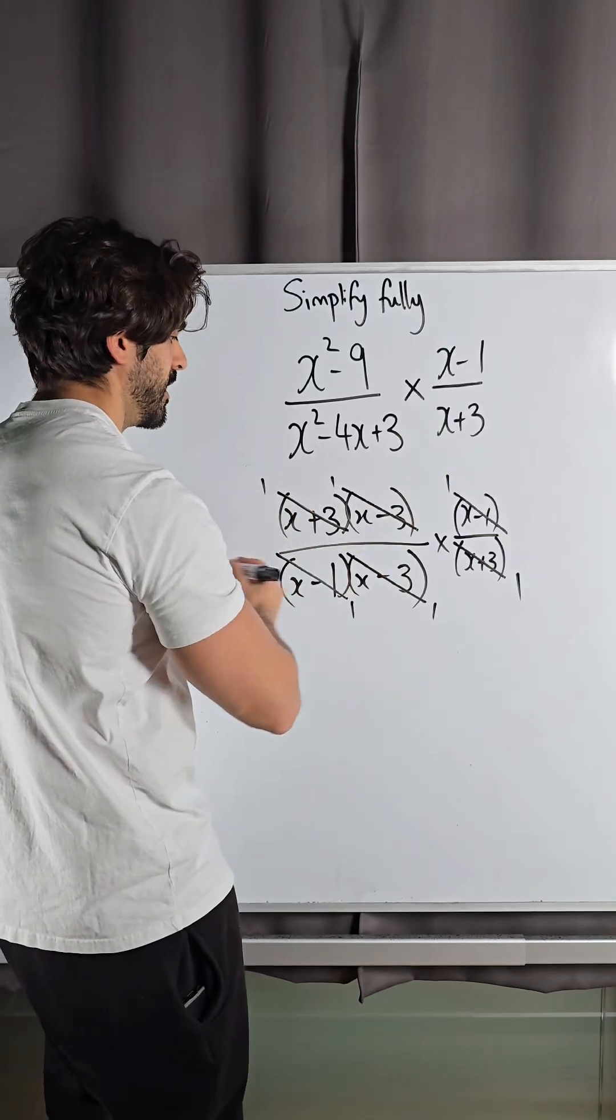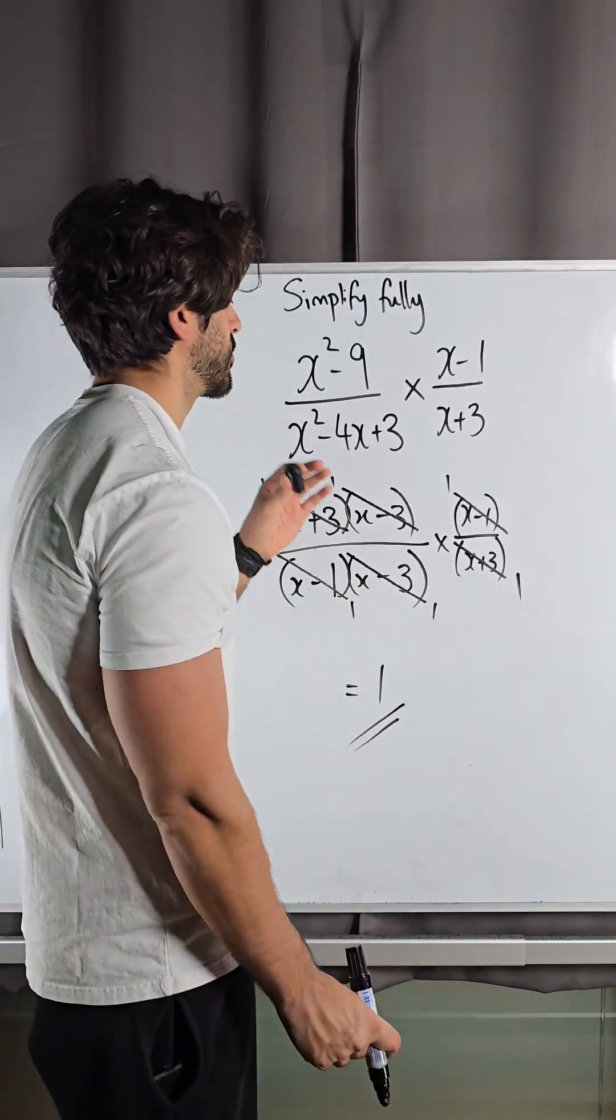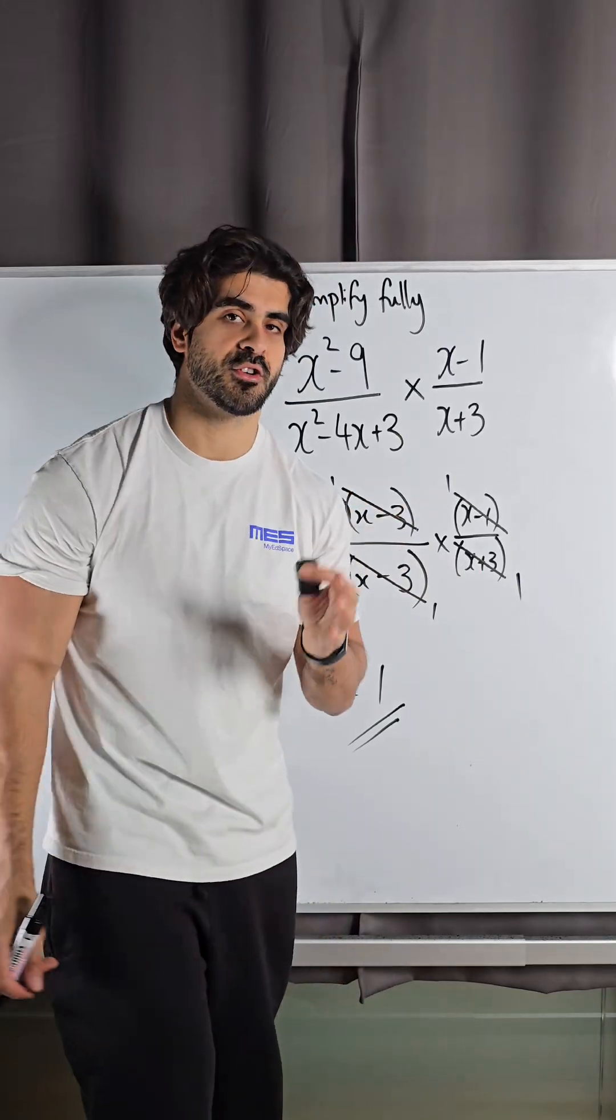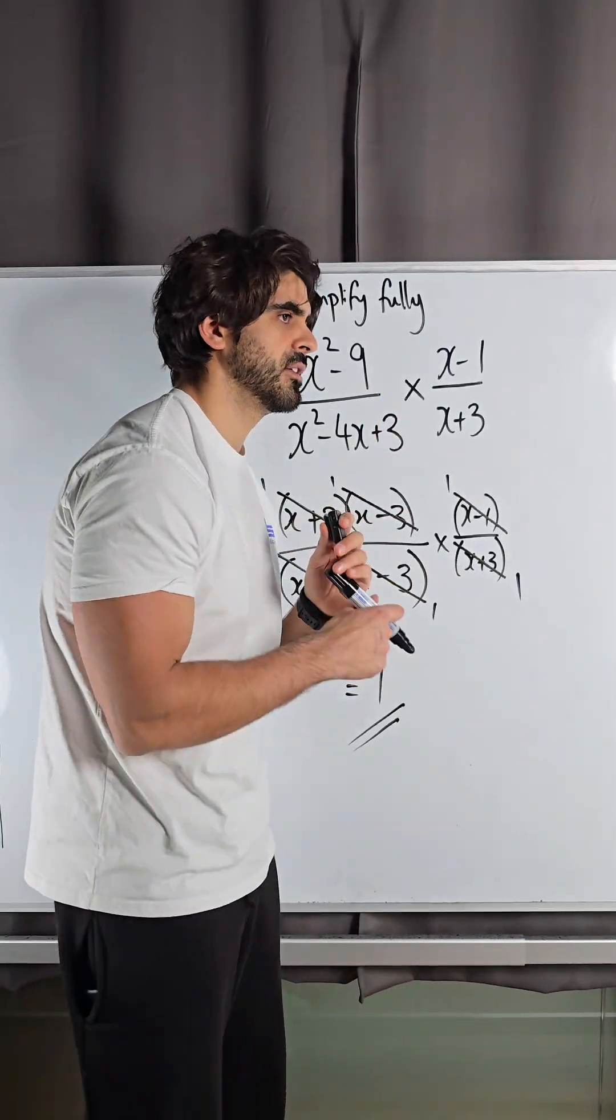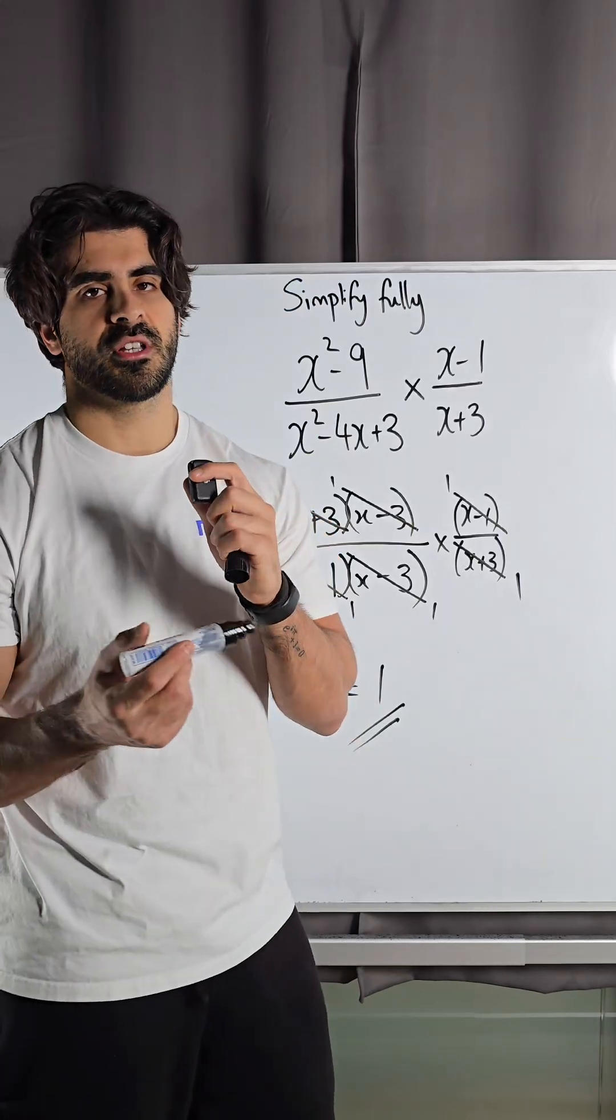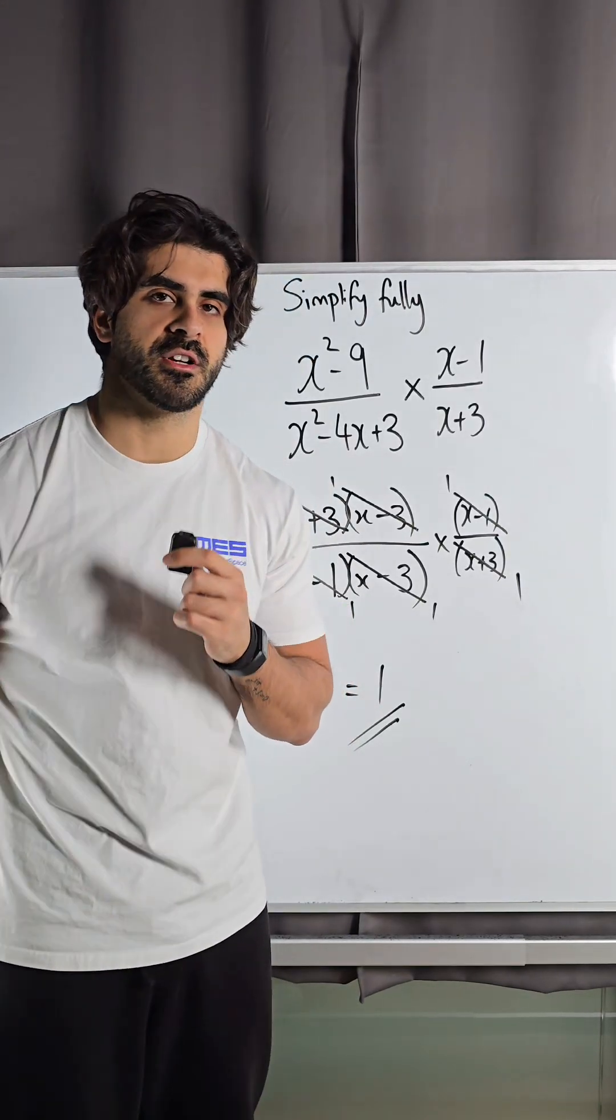So we're left with 1 on the top, 1 on the bottom. It all simplifies very nicely down to 1. So this video is part of your algebraic fractions simplification, maybe a cheeky bit of maths in there, and head to myspace.co.uk if you need more help with your GCSEs and Neil Does Maths on YouTube for more videos.